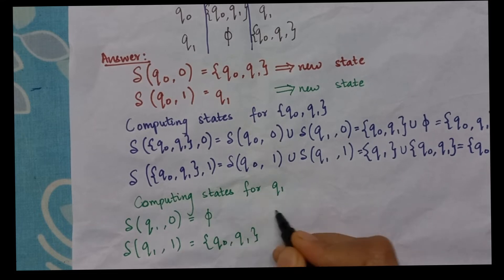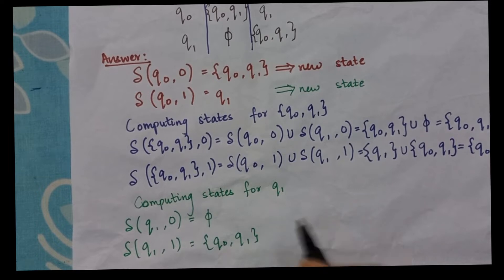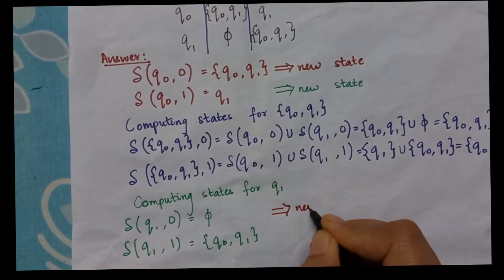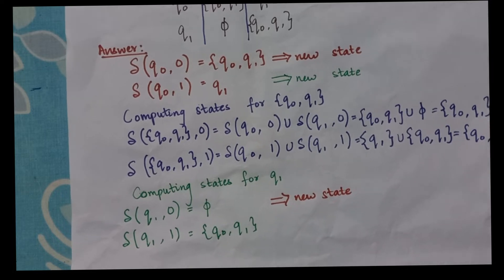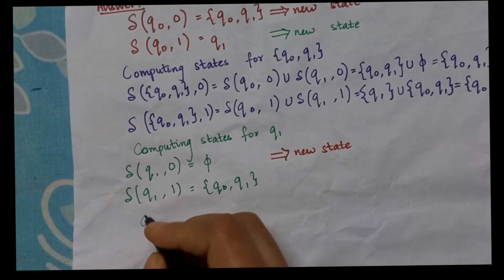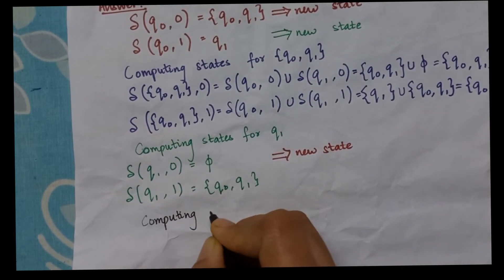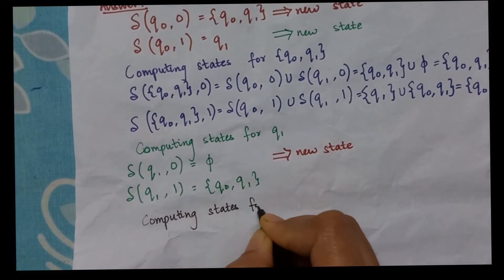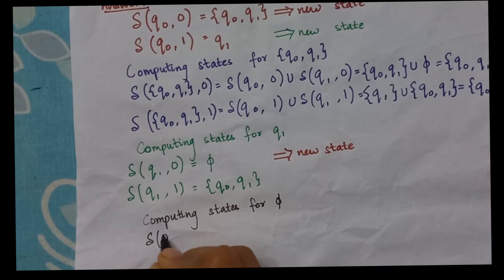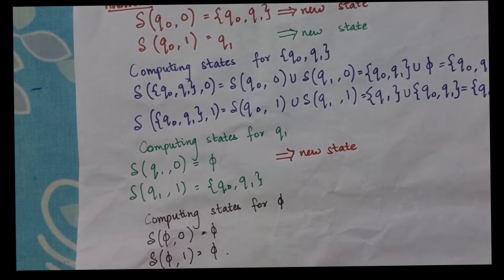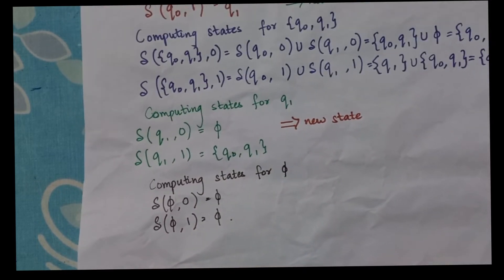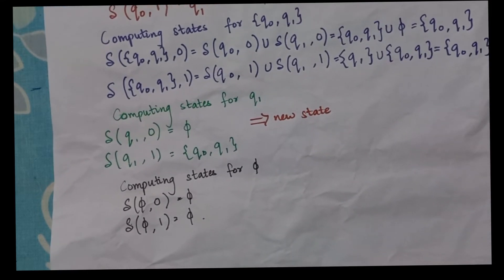I got null, which is a new state. Since this is a DFA we must compute for all states. So I compute for null: null with 0 gives null, and null with 1 gives null. So now this completes the computation. First I will do the transition table, then I will draw the DFA.